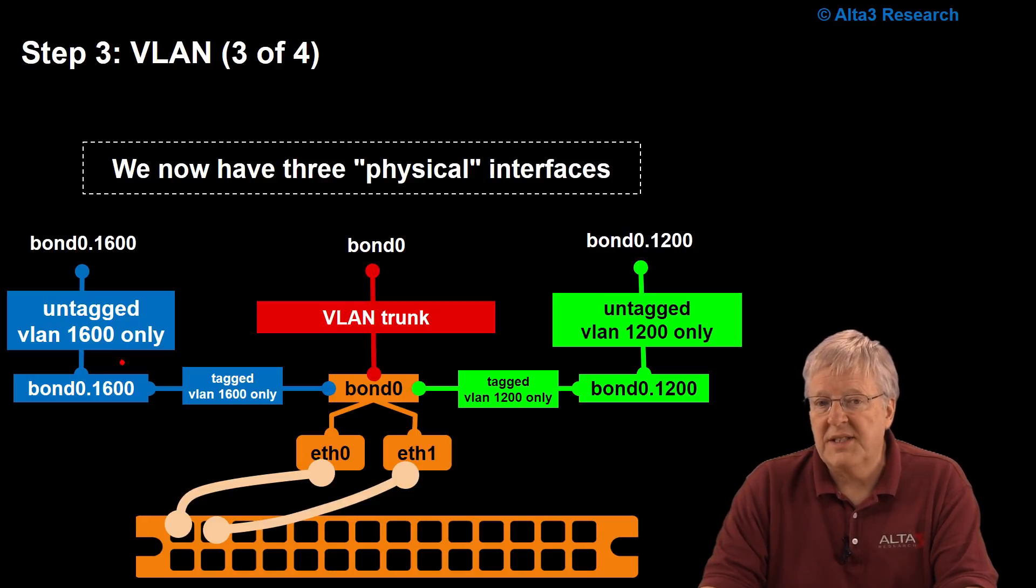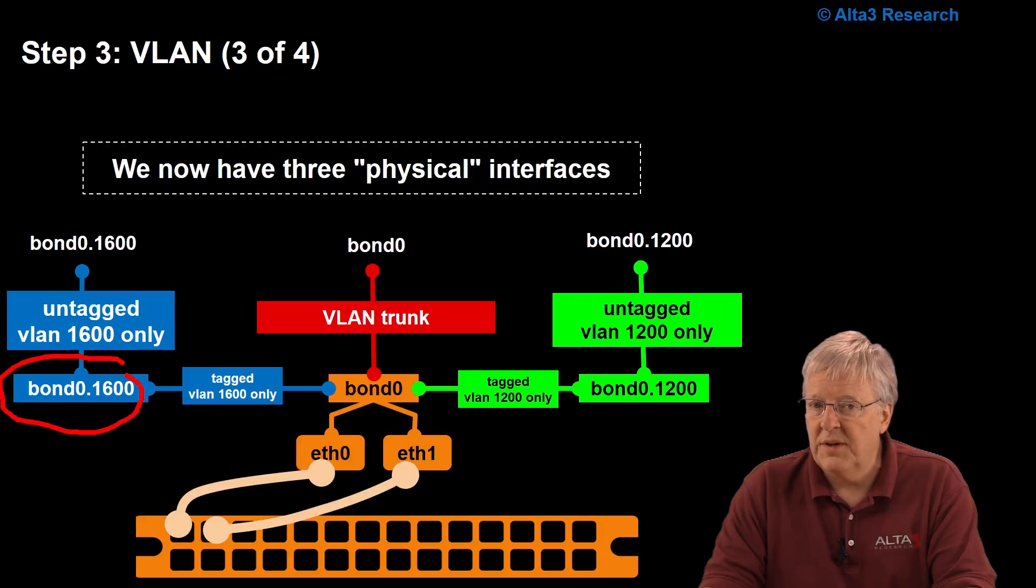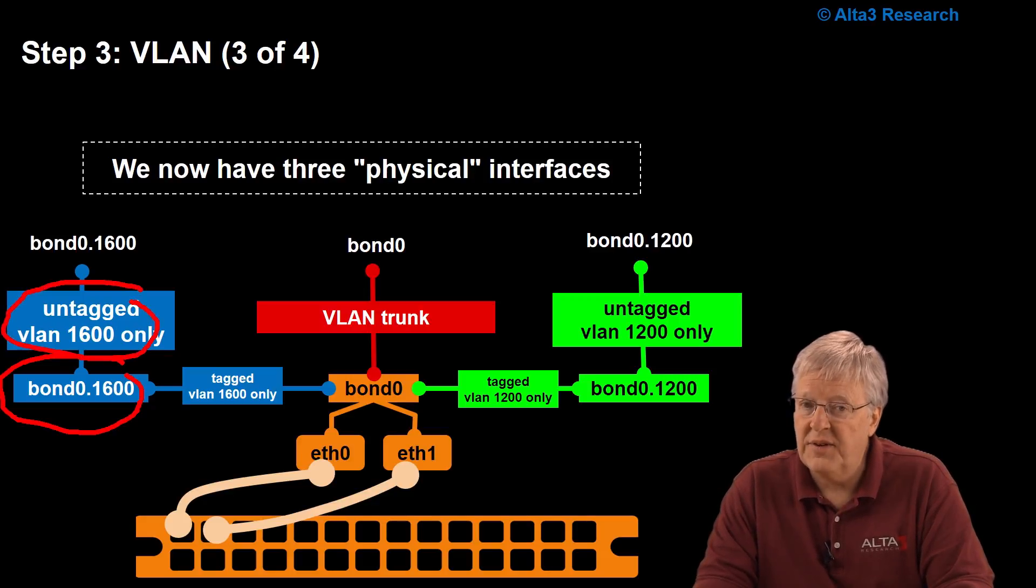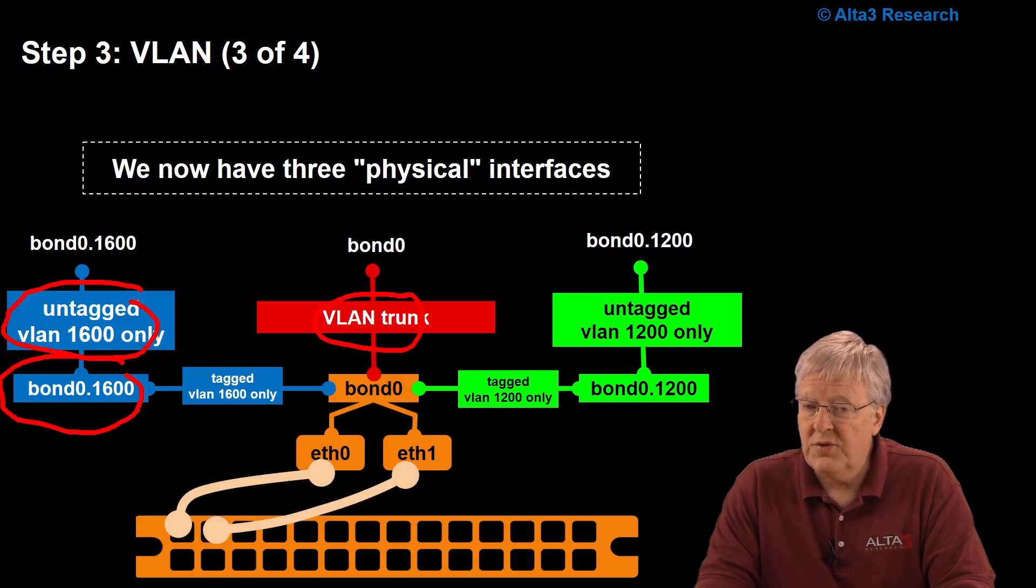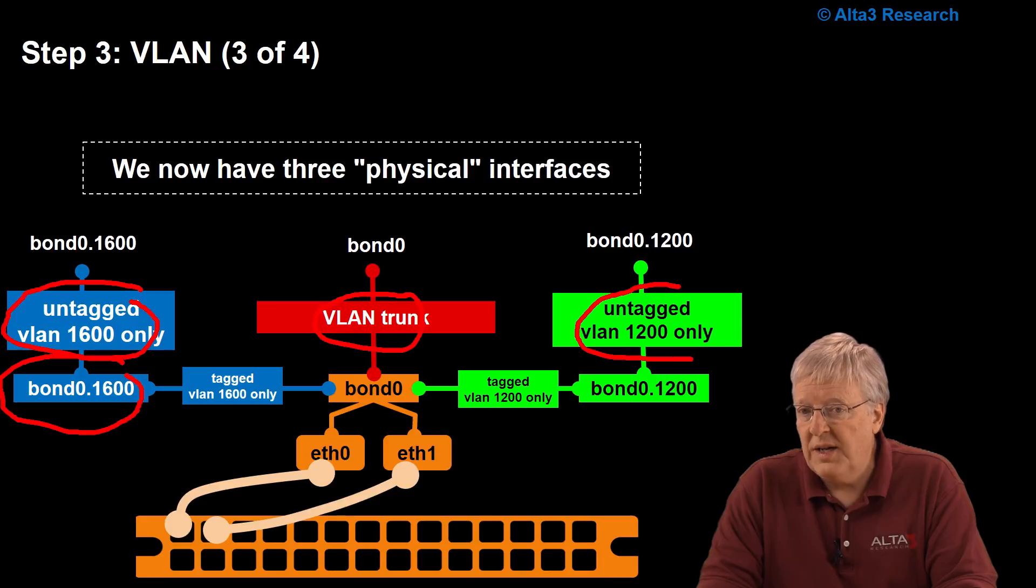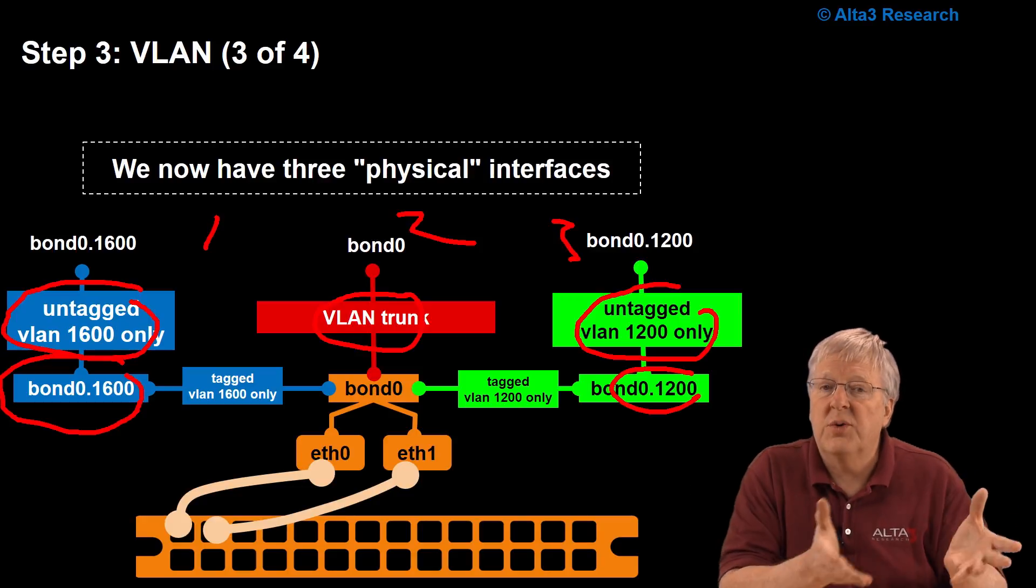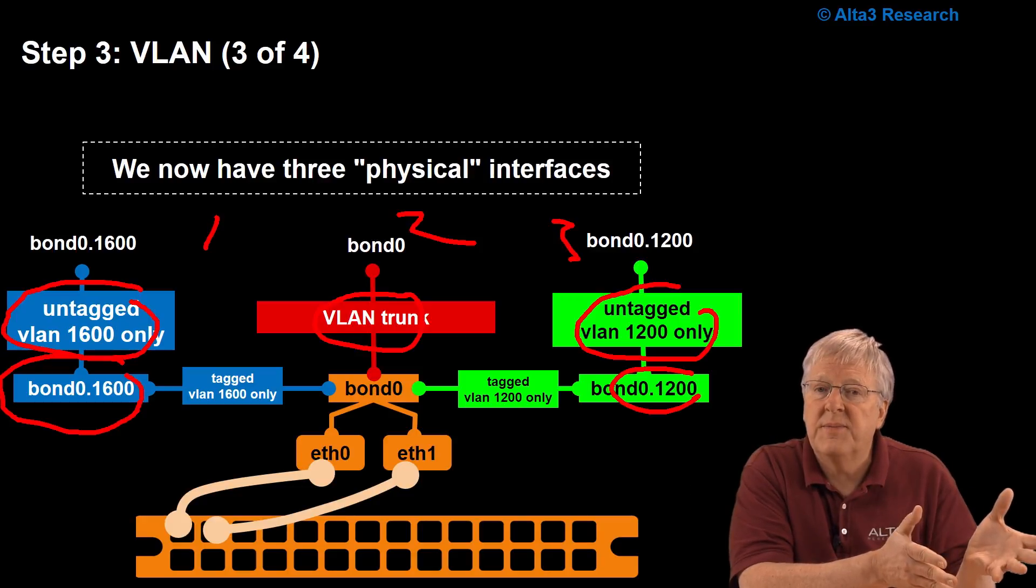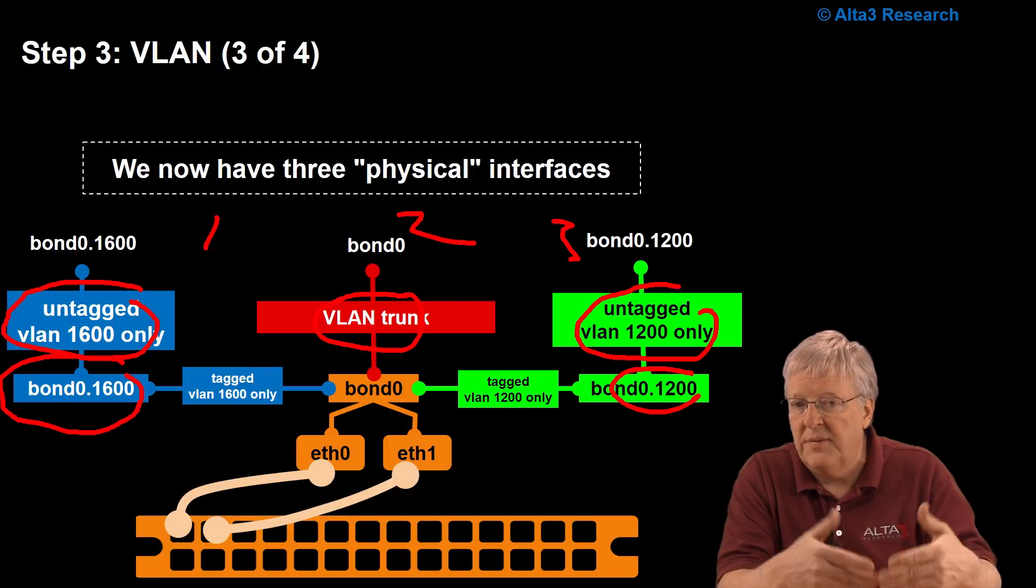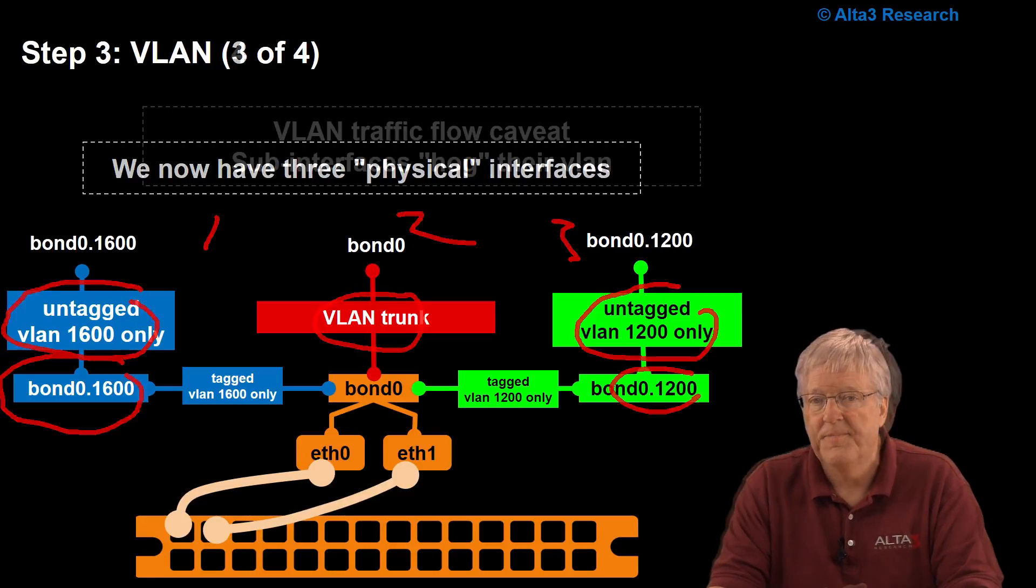And the way we have it set up, because this blue interface is a sub-interface, I will see untagged VLAN 1600 traffic here. This is a VLAN trunk, because there is no sub-interface. And we have untagged traffic over here, in this case for VLAN 1200. One, two, three. Great. We've just created three interfaces that were on top of a single-bonded interface.